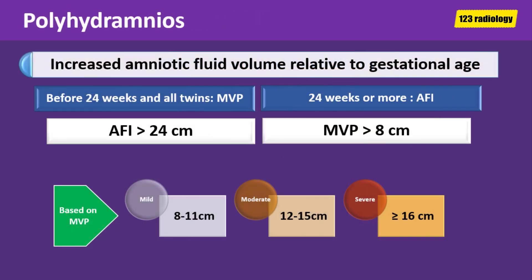Polyhydramnios is defined as increased amniotic fluid volume relative to gestational age. Before 24 weeks of gestation and in all twins, we measure the maximum vertical pocket. At 24 weeks and later, we measure the amniotic fluid index. An amniotic fluid index more than 24 cm or maximum vertical pocket more than 8 cm indicates polyhydramnios. Maximum vertical pocket is used to classify polyhydramnios into mild (8 to 11 cm), moderate (12 to 15 cm), and severe (equal to or more than 16 cm).